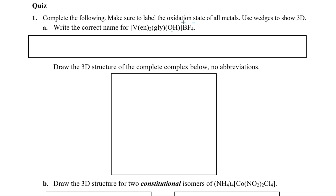You have to know these charges. Hydroxide is negative one, and when it becomes a hydroxo ligand we still count it as negative one. Glycinate is a deprotonated amino acid — glycine — so it carries a negative one charge as the glycinato ligand. Ethylenediamine is neutral — no charge there. Most importantly, you also need to know the charge on the metal. We have two negatives, so we need at least three positives to make the whole complex a positive one, giving vanadium a +3 oxidation state.